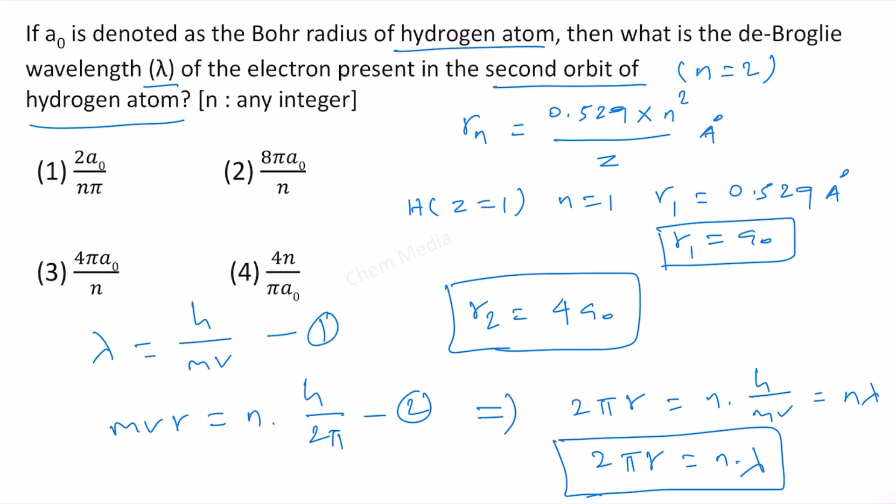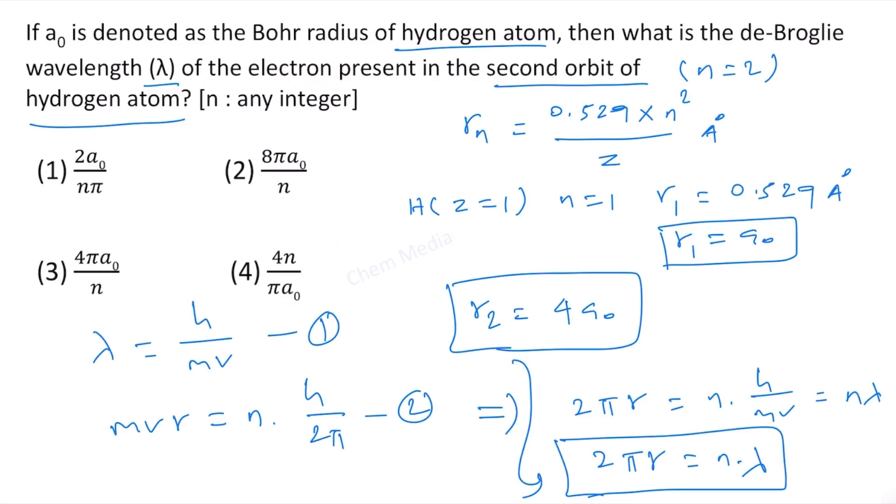And therefore, let us substitute this r value here. If we do that, then 2π times 4 times a₀ is equal to n times λ. This n could be any integer. Therefore, λ is equal to 8πa₀ divided by n. That is the correct answer. This means that option 2 is correct.